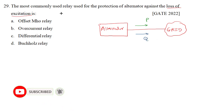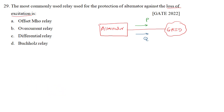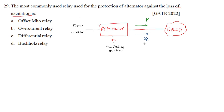Now when there is a failure of excitation, the alternator has two inputs: one from the prime mover, and the field winding supplied by the excitation system. If this DC excitation fails, it will not supply reactive power to the grid. Instead, it will take reactive power from the grid — so the direction of reactive power reverses.